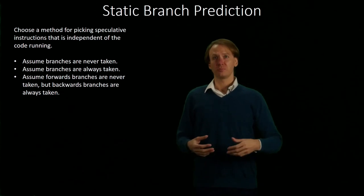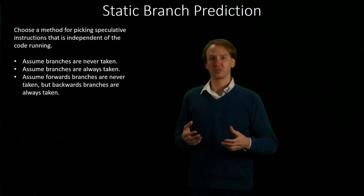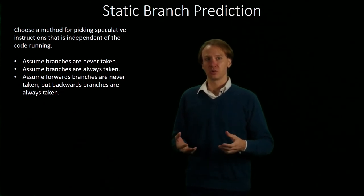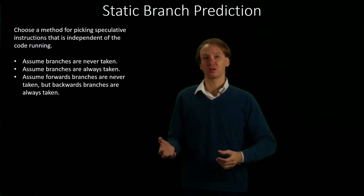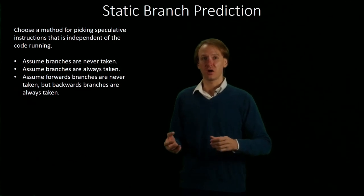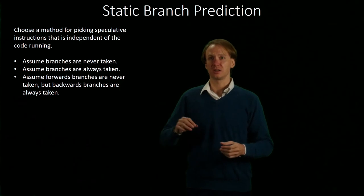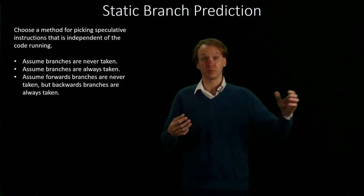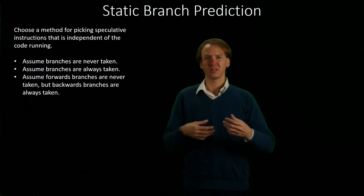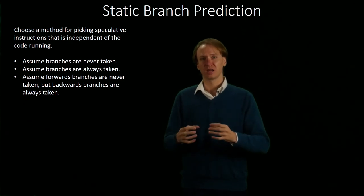If we're going to build a static branch predictor, then we're really going to be interested in the properties of code in general. When are we likely to take branches? When are we not likely to take branches? And how does that work across all sets of code? Looking at things like: is this branch implementing an if statement, a loop, a case statement, or something else that we can readily identify to get some idea about what this code is likely to want to do.